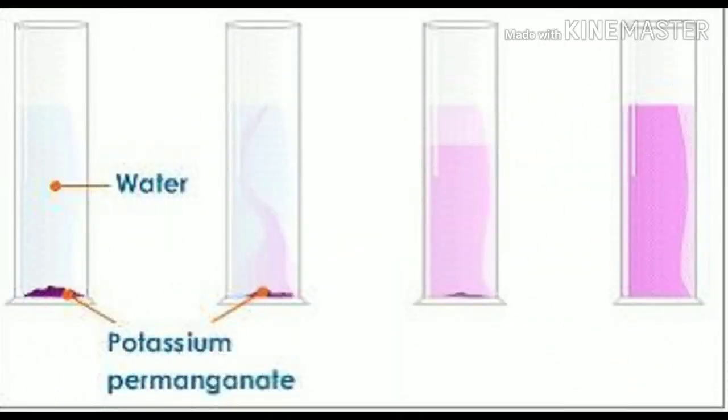For example, if you place potassium manganate in water, it slowly spreads out. This is due to the particles of potassium manganate diffusing among the water particles. The random motion of particles in a liquid causes the potassium manganate to evenly spread out.